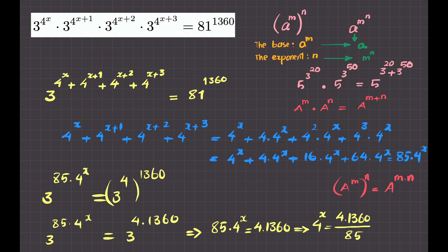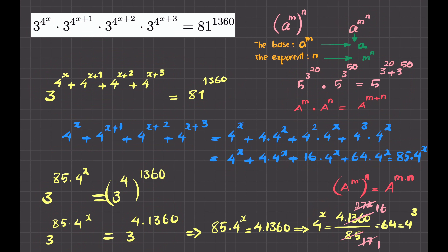Dividing both sides by 85, 4 to the x equals 4 times 1360 divided by 85. Simplifying by 5: 1360 divided by 5 is 272, and 85 divided by 5 is 17. Then simplifying 272 and 17 by 17 gives 16. So 4 to the x equals 4 times 16, which is 64. But 64 is 4 to the power of 3. So 4 to the x equals 4 to the power of 3, meaning x equals 3, as the problem claimed.